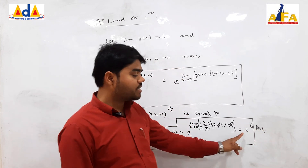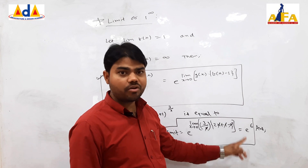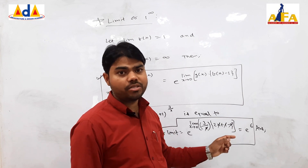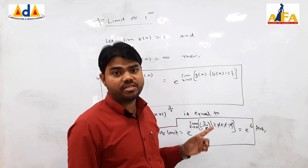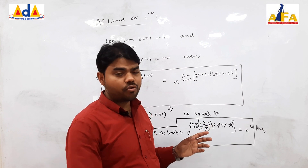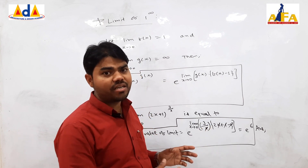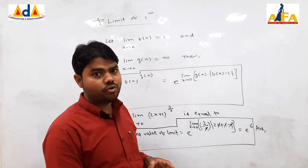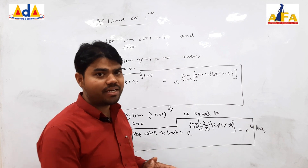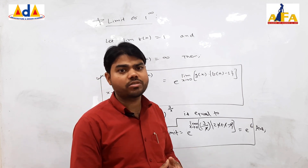Here e is the exponential number. It is a constant whose value is approximately 2.718282, going up to infinity. It is an irrational number. We say in simple terms it is approximately 2.72.